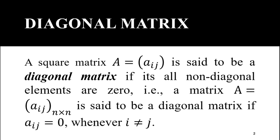In a square matrix a_ij, the elements having the same row suffix and column suffix are the diagonal elements, and the elements having different row suffix and column suffix are the non-diagonal elements. So all non-diagonal elements must be 0 in a diagonal matrix, and the diagonal elements may be 0 or non-zero.